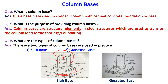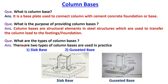So this base plate is called the column base. The purpose of column base is that it is a structural element in steel structures which is used to transfer the column load to the concrete foundation. There are two types of column bases used in practice: slab base and gusseted base.